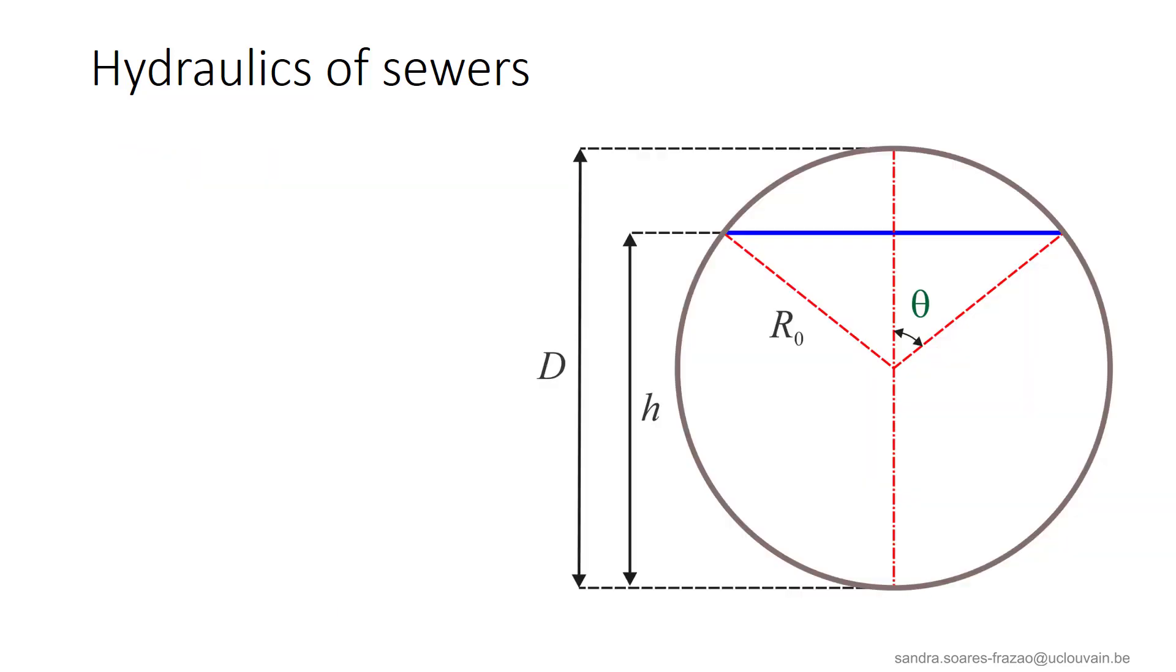Let us consider the case of a circular cross section of diameter D. If the water depth in the pipe is h, we can express h as a function of angle theta. In this expression, R0 is the pipe radius.